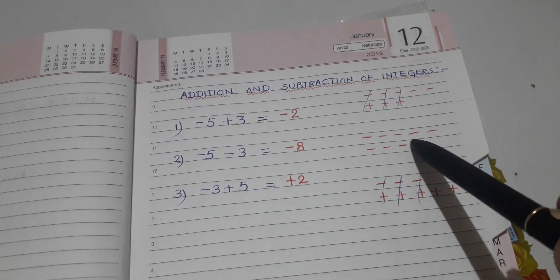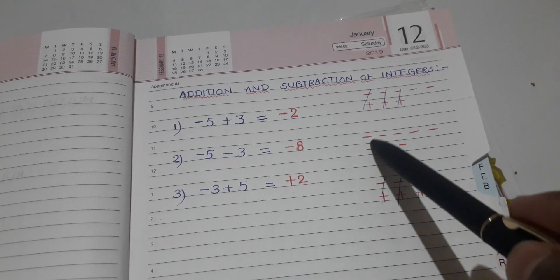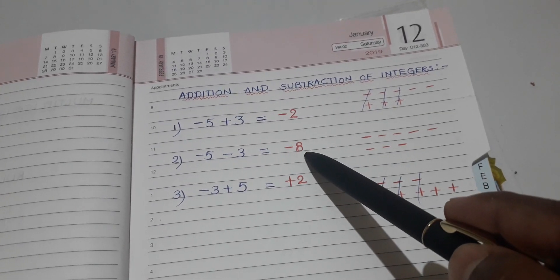1, 2, 3, 4, 5, 6, 7, 8. 8 minus symbols are left, so the answer is minus 8.